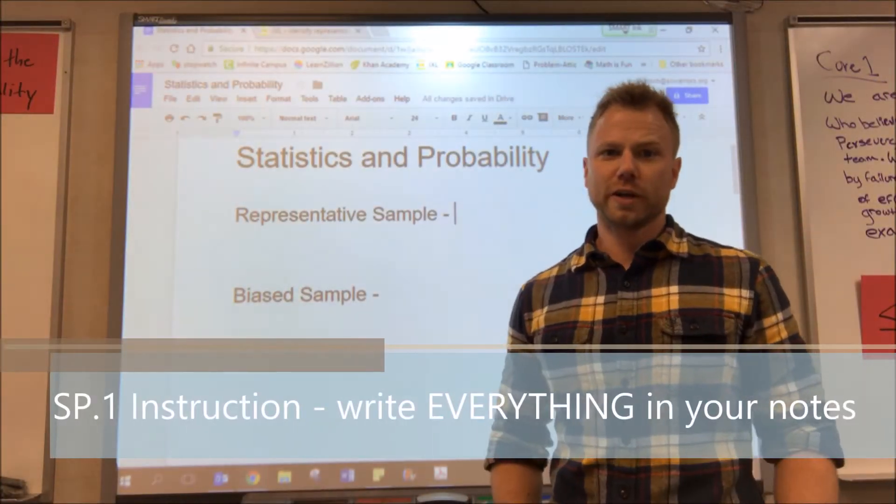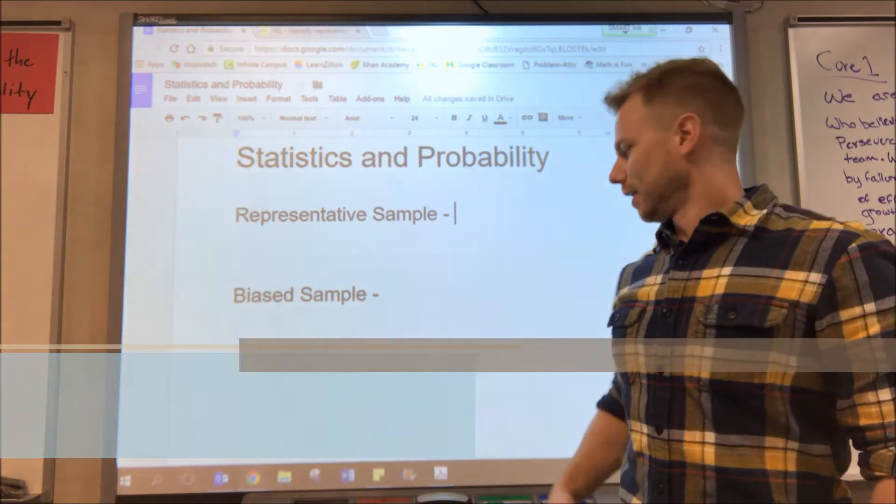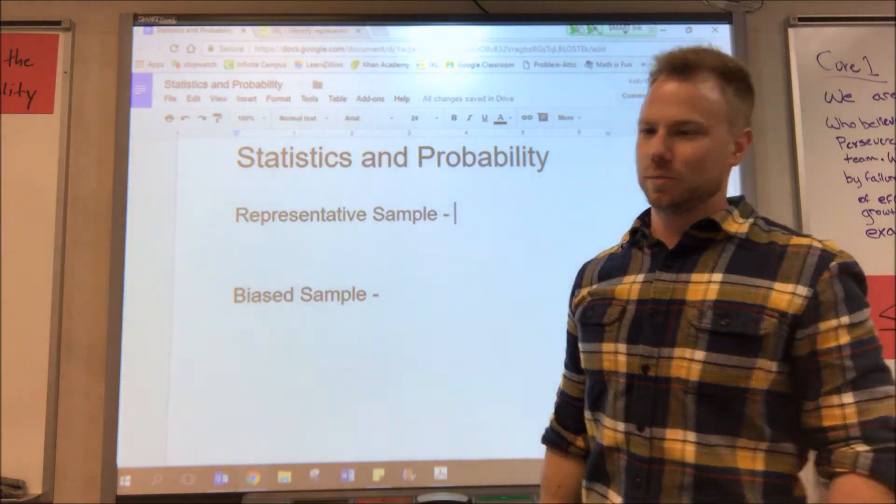What is good 7th graders? We are starting to talk about statistics and probability. A couple things we need to talk about first are representative sampling and biased sampling.